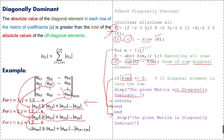Otherwise, if that condition is not true — meaning the diagonal element is greater than the sum of off-diagonal elements — we display 'the given matrix is a diagonally dominant matrix'. Let's run this code in MATLAB and check.